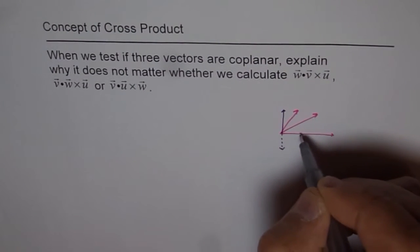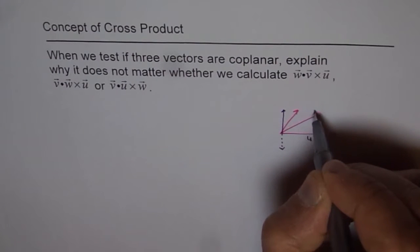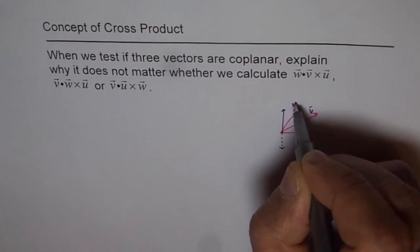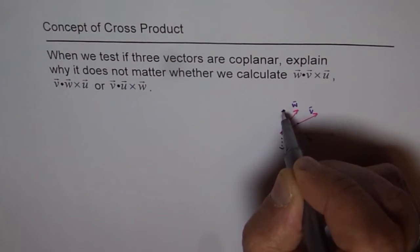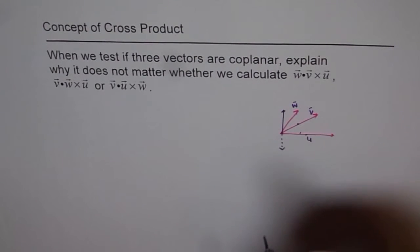So, if I do, let's say this is u, this is v, and that is w. If I do u cross v, then I'll get a vector which will be pointing outside this paper.